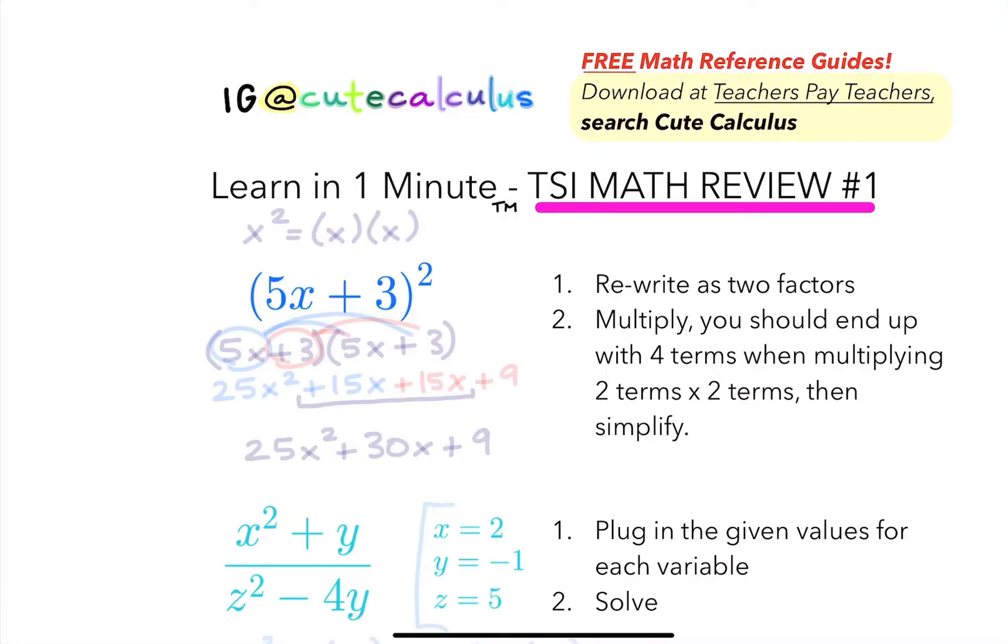All right, beginning our TSI math review. As a reminder, when you have a term squared, like for example if we had x squared, that's the same as x times x. So we're going to rewrite this as 5x plus 3 times 5x plus 3.